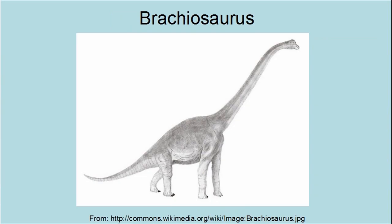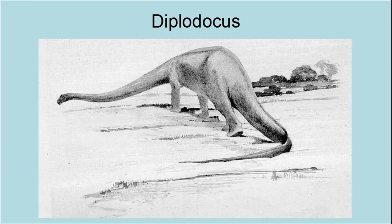Here are some of the better known types of dinosaurs. This is a Brachiosaurus — they are the largest land animals to ever walk the earth. Here is a picture showing a Diplodocus. Note the long neck with a tiny head, long thick tail, and large body.